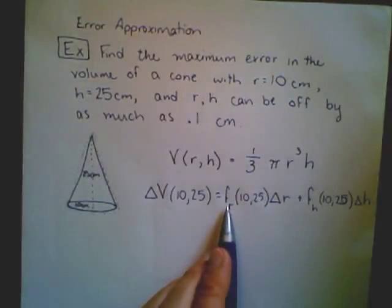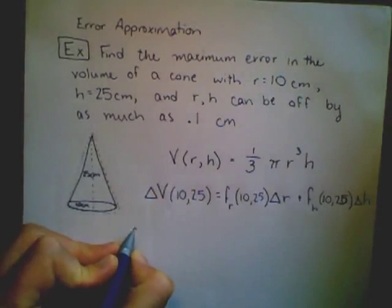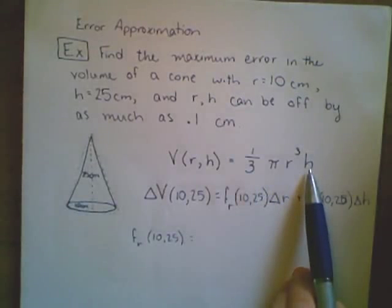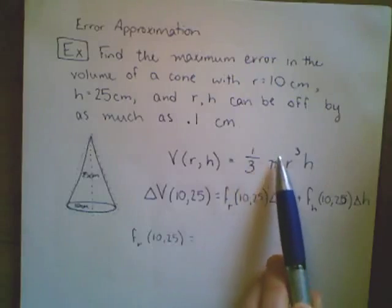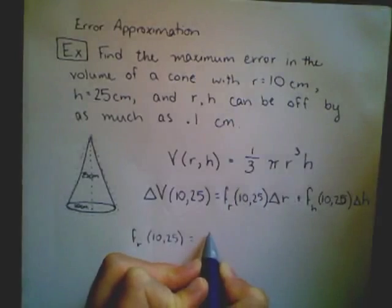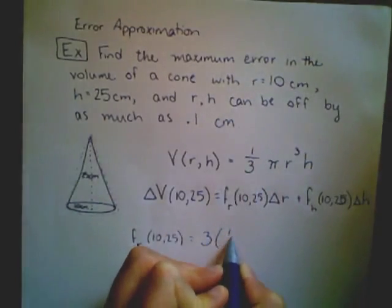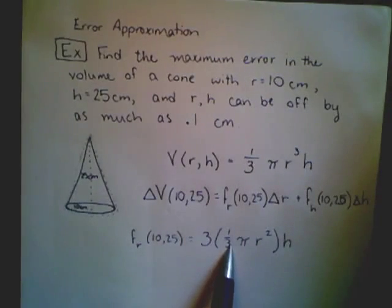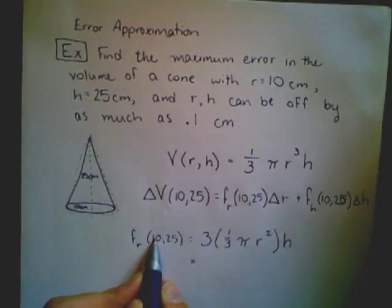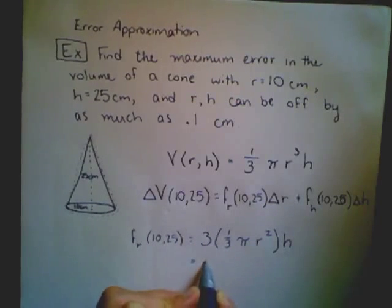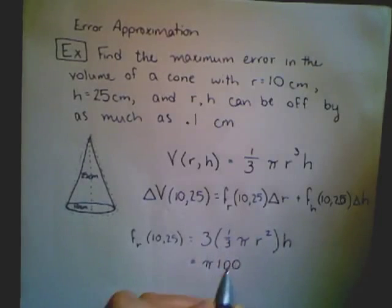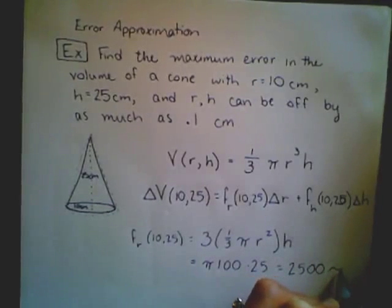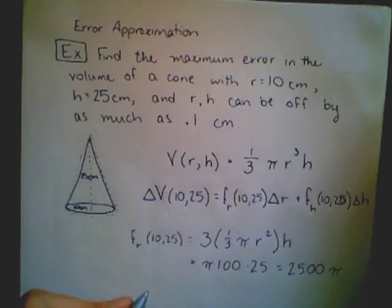Let's break each of these pieces down. The partial derivative with respect to r evaluated at the point (10,25) treats h as a constant, like a coefficient. The partial derivative with respect to r equals 3 times (1/3)πr²h. The 3 comes from the polynomial rule and cancels with the 1/3. Evaluating at r=10 and h=25, I get r² is 100 times h is 25, which equals 2,500π.